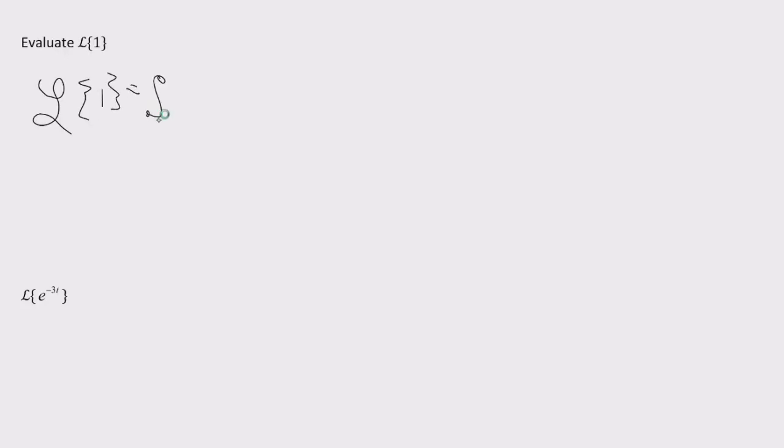So the definition was the integral from zero to infinity of e to the negative st times one dt. Which, if we apply our limit definition, so that's the limit as b approaches infinity of zero to b e to the negative st dt.